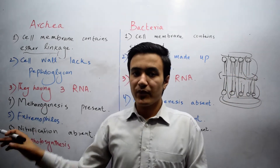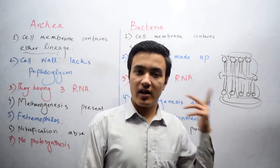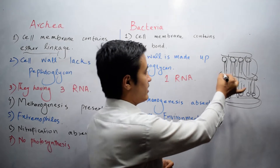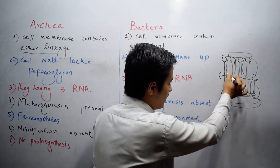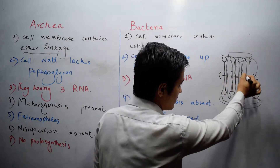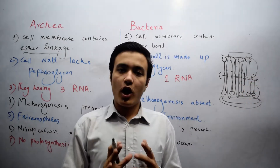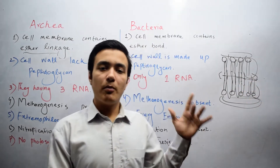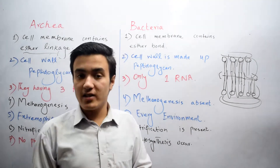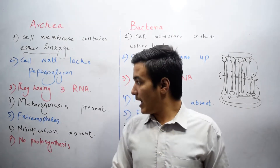That's why in Archaea, the cell membrane contains ether linkage, while in Bacteria this linkage is absent — meaning it has ester bonds. Both the lipids are connected with each other with a bond known as an ester bond. So that was the first difference between Archaea and Bacteria.